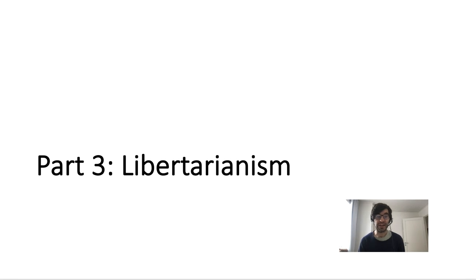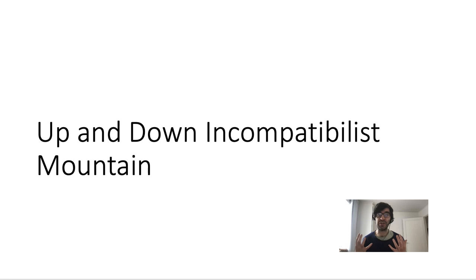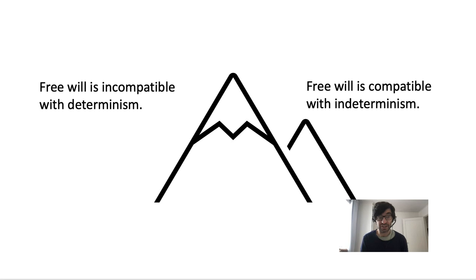In the third part of the first lecture, I'll be talking about different versions of libertarianism and Franklin's theory in particular. Libertarianism is a difficult theory to defend because we have to do something that we might call climbing up and down incompatibilist mountain. First, you need to show that free will is incompatible with determinism, so that compatibilism is false.